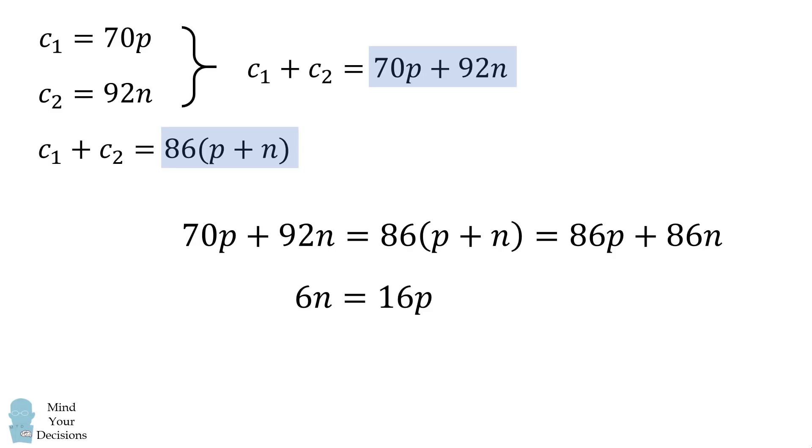We'll now get all of the n terms on the left-hand side and all of the P terms on the right-hand side. So we have 6n is equal to 16P. And we can simplify this to get P divided by n is equal to 6 over 16, and that's our answer.